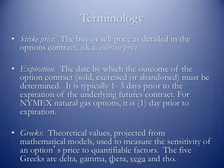The strike price is the buy or sell price as detailed in the options contract, also known as the exercise price. Expiration is the date by which the outcome of the options contract — whether it's sold, exercised, or just abandoned — has to be determined. Options expire typically one to three days prior to the expiration of the underlying futures contract. For natural gas options as an example, it's one day prior to the expiration of the underlying contract. We know the underlying natural gas contract on NYMEX expires three working days prior to the first of the month; therefore, natural gas options expire four working days prior.